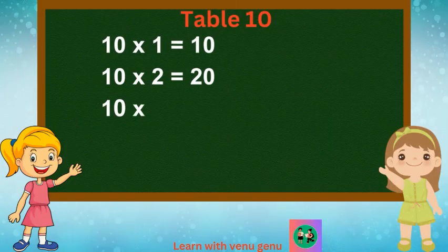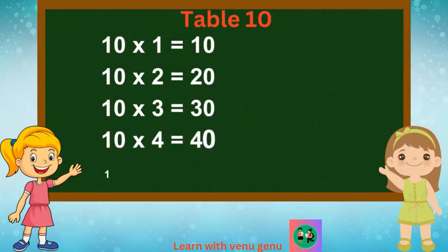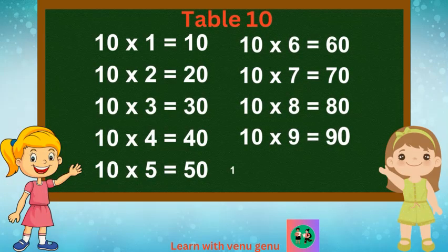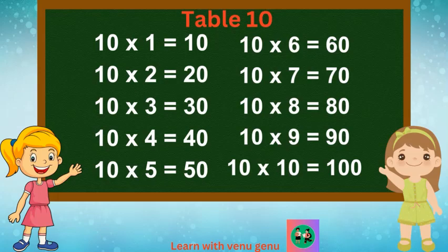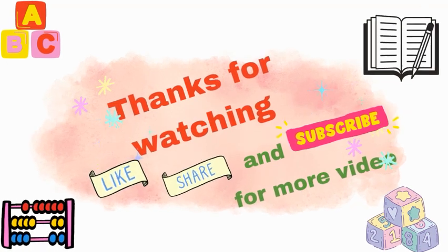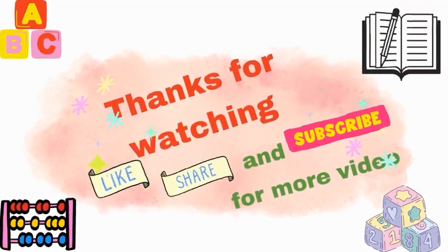10 1s are 10, 10 2s are 20, 10 3s are 30, 10 4s are 40, 10 5s are 50. 10 6s are 60, 10 7s are 70, 10 8s are 80, 10 9s are 90, 10 10s are 100.